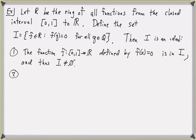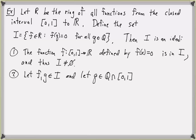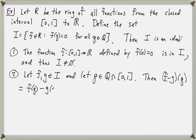Secondly, let's show I is closed under subtraction. Let f and g be functions in I, and let q be a rational number in [0,1]. Then (f − g)(q) = f(q) − g(q) = 0 − 0 = 0. Thus f − g is in I, so I is closed under subtraction.